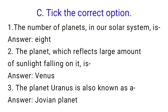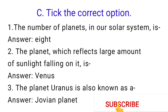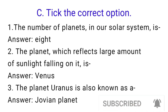Pick the correct option: 1. The number of planets in our Solar System is Answer A. 2. The planet which reflects a large amount of sunlight falling on it is Answer Venus. 3. The planet Uranus is also known as Answer Jovian planet.